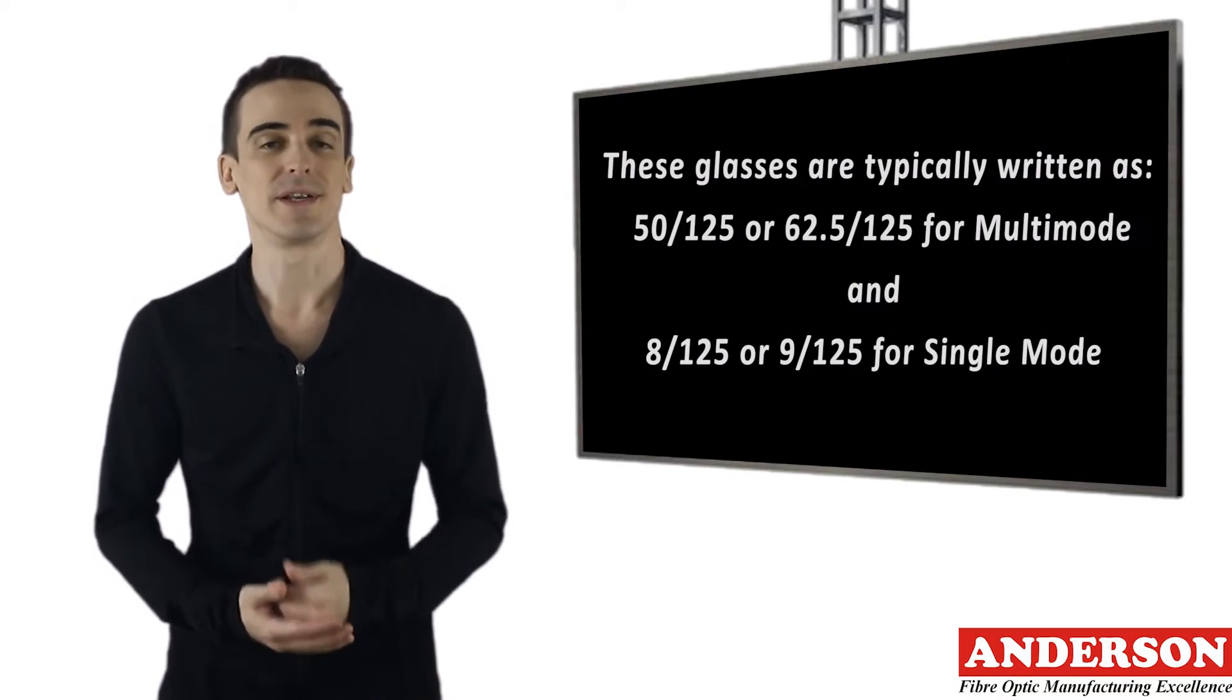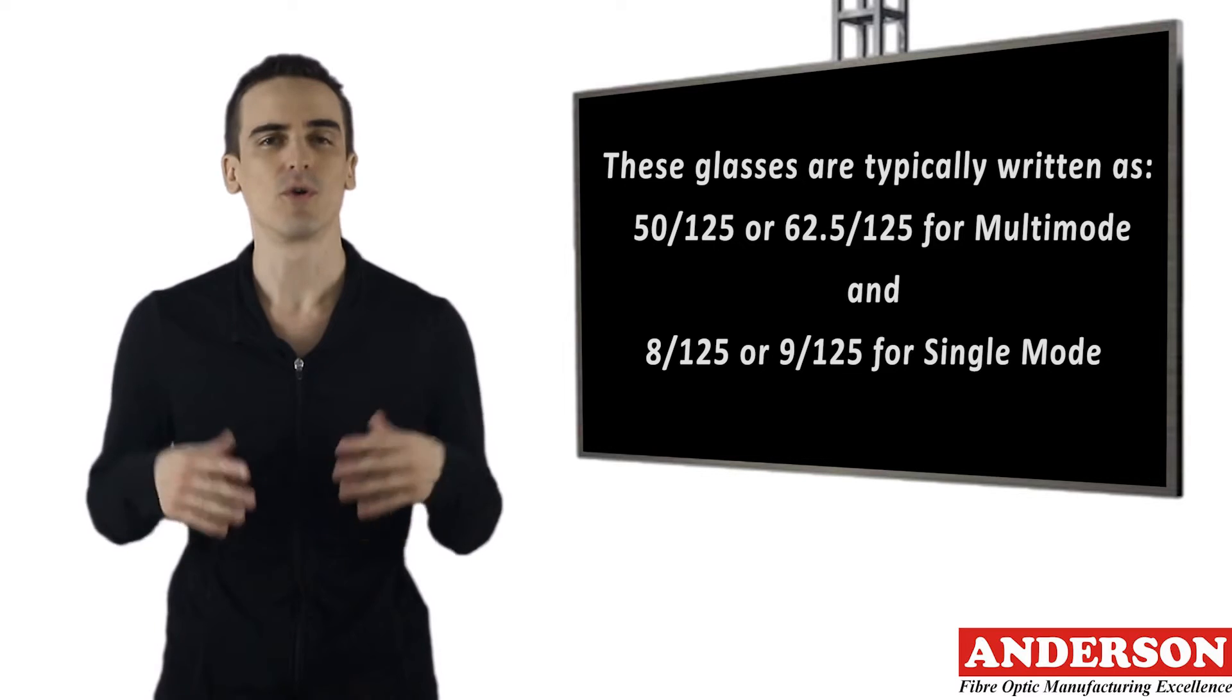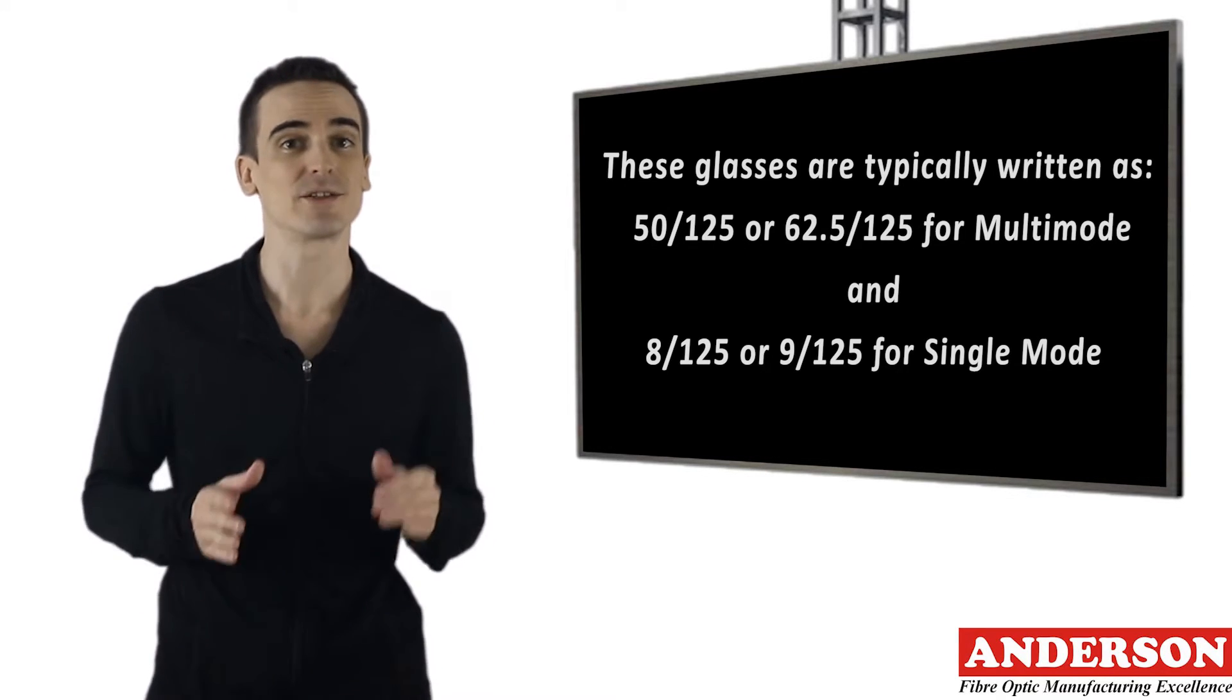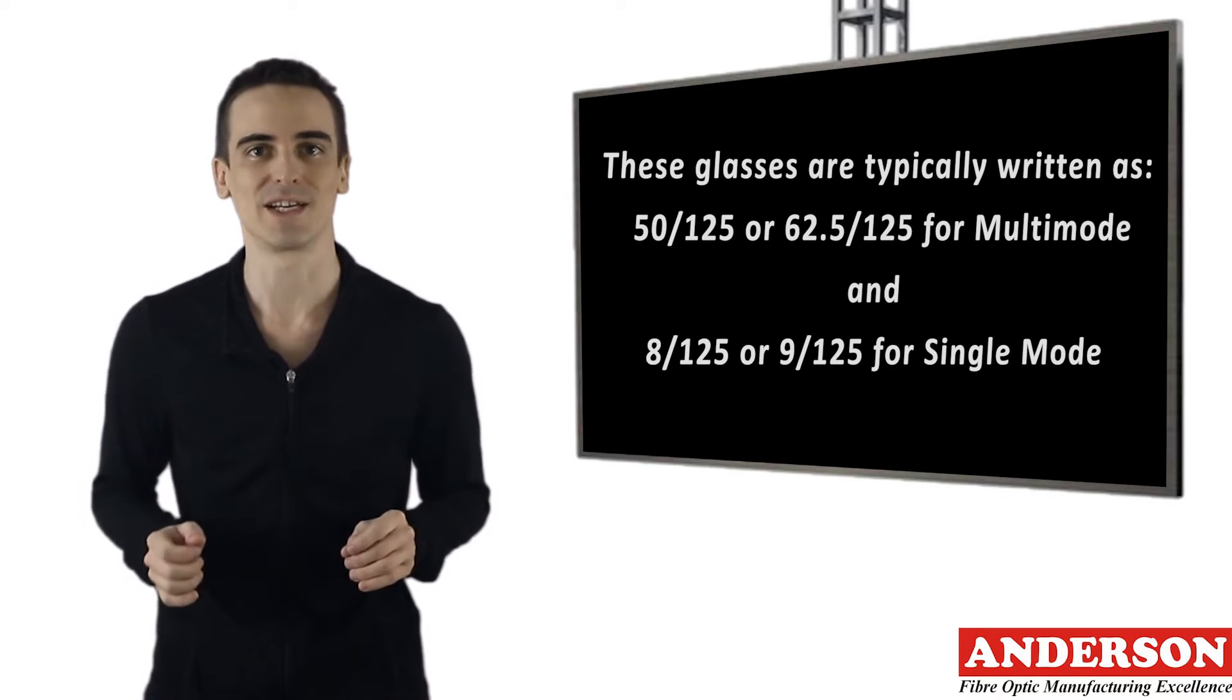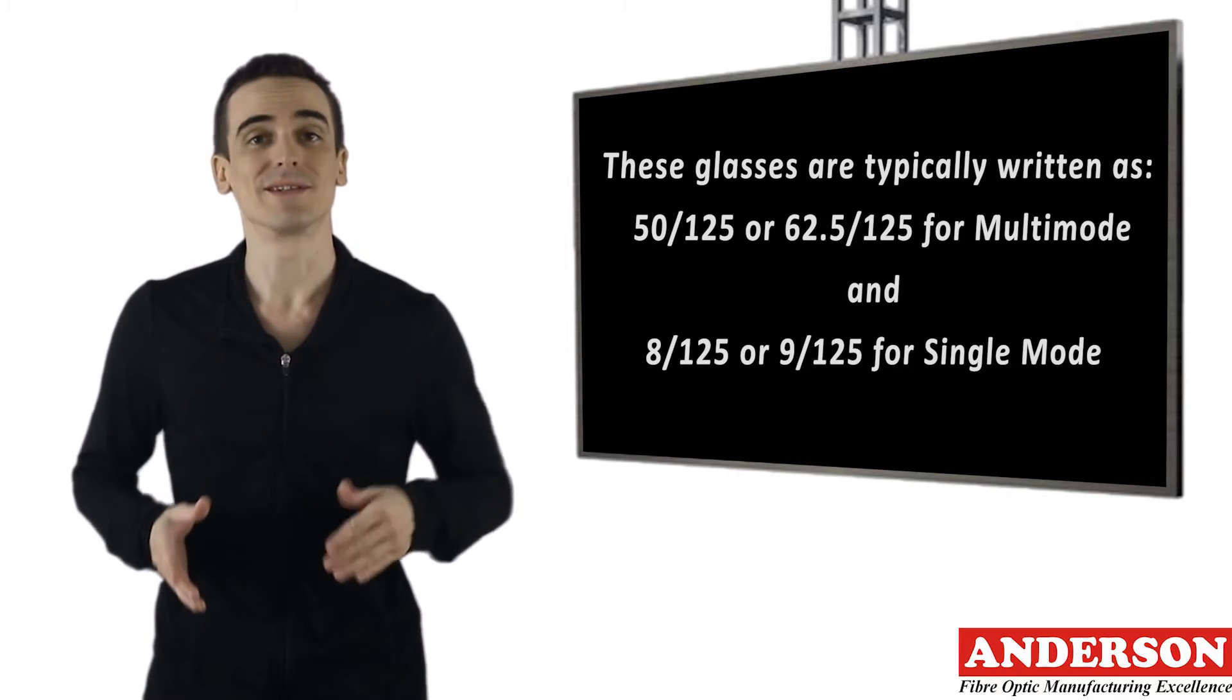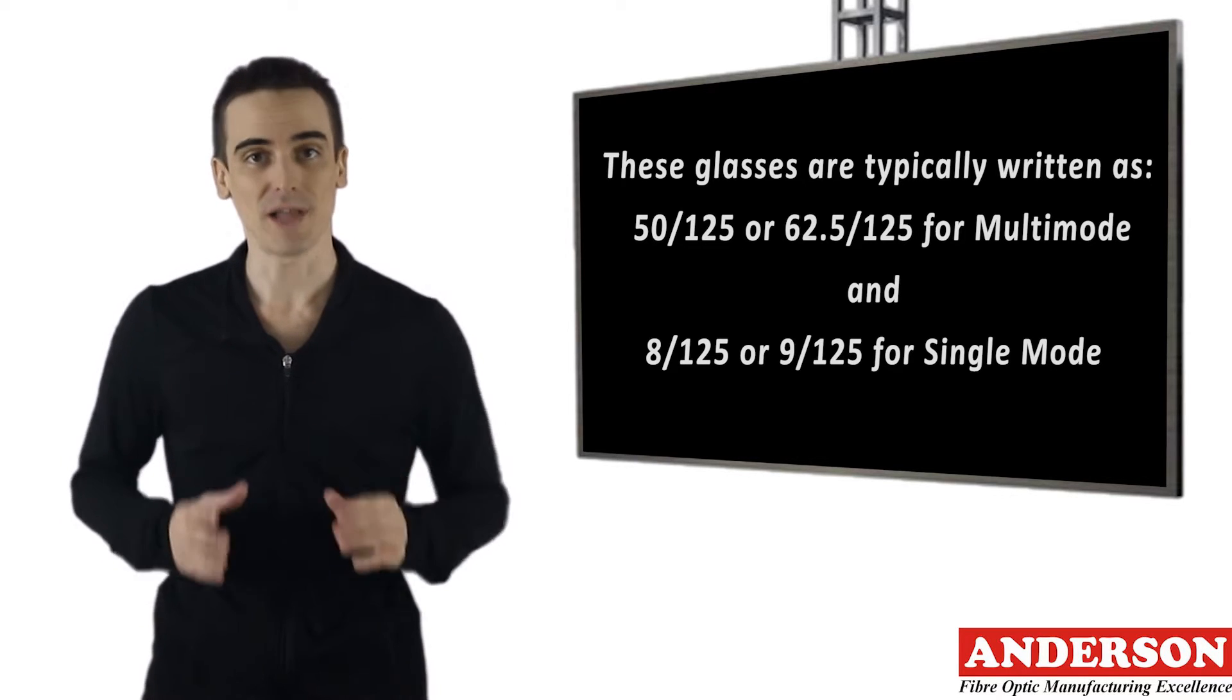These glasses are typically written as 50/125 or 62.5/125 for multimode, and 8/125 or 9/125 for single-mode, where the first number is the measurement of the core and the second number is the measurement of the cladding.